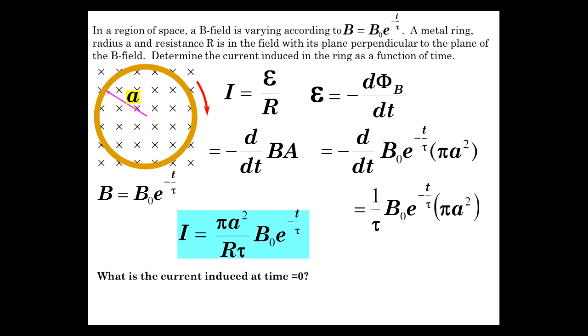Now, what's the current at time T is equal to 0? Well, just put 0 in there for T and you get your answer. B₀πA² over Rτ.